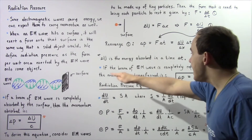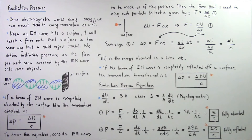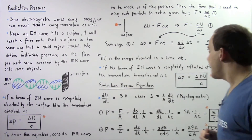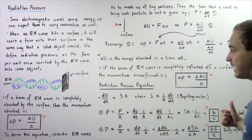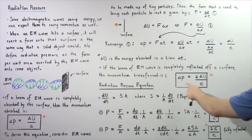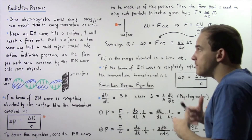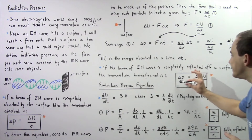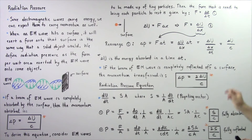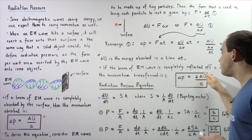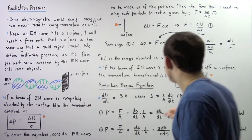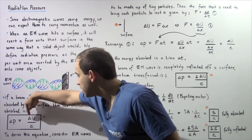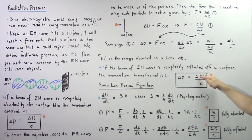On the other hand, if the beam of electromagnetic wave is completely reflected off of the surface and none of it is absorbed, then the momentum transferred equals 2 multiplied by delta u divided by c. If some of that radiation is absorbed and some is reflected, then the equation becomes delta p equals a factor 'a' multiplied by delta u divided by c, where that factor 'a' is a value between 1 and 2.